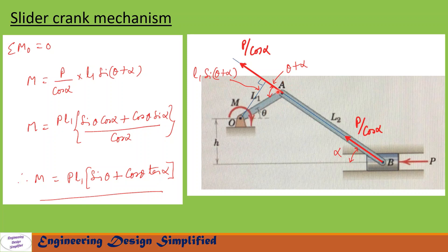Taking moments about O for the crank OA: the force P / cos(alpha) acts with perpendicular distance l1·sin(theta + alpha), so the moment due to this force about O is (P / cos(alpha)) · l1·sin(theta + alpha). A counter-clockwise moment M is applied in the clockwise direction to balance it. Setting the sum of moments about O equal to zero: M = (P / cos(alpha)) · l1·sin(theta + alpha). Expanding sin(theta + alpha) gives sin(theta)·cos(alpha) + cos(theta)·sin(alpha), so after substitution the cos(alpha) terms interact.